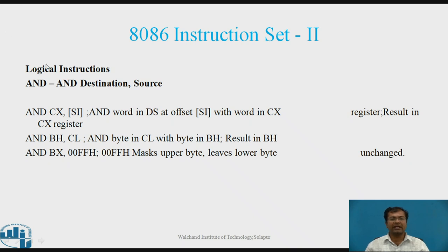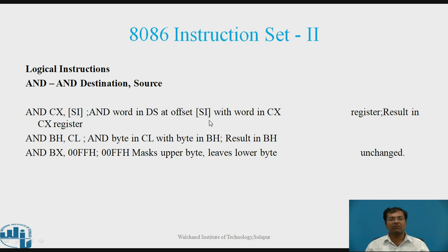Now we will move to the second type of instruction, which is Logical. First: Logical AND. The syntax is AND Destination, Source. Example: AND CX, SI — it performs logical AND of the word in DS at offset SI with the word in CX register, and the result is stored in CX.